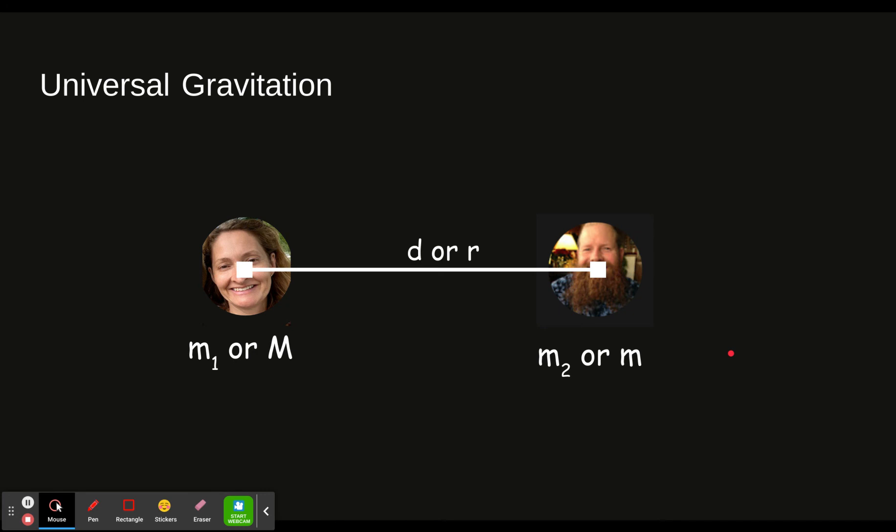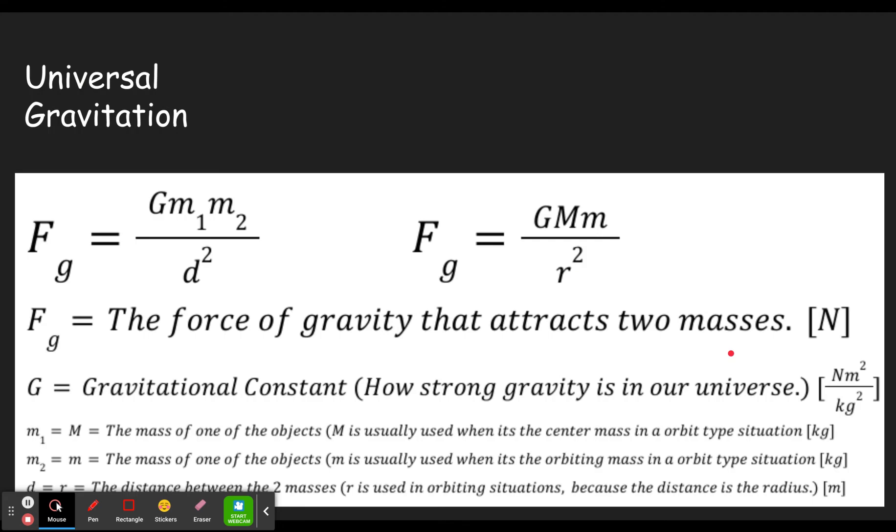All right, so here's the equation without any further ado. Universal gravitation, we see the equation right here and this is where it's written the way it's written in the concept builder here. In other places like Positive Physics you'll see it listed as capital M lowercase m, once again primarily when we're talking about something like the sun and the earth or the earth and the moon, the bigger object has the capital M.